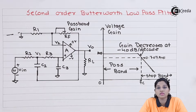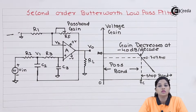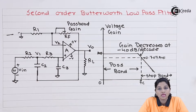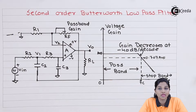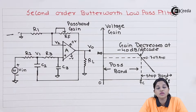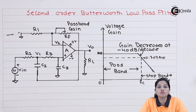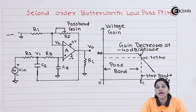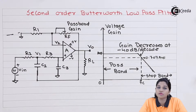The negative sign indicates a decrement in gain. In this video, as we are analyzing the second order Butterworth low pass filter, the gain in the stop band decrements by minus 40 dB per decade. As the order of the filter increases, the roll-off rate also decrements by an additional 20 dB per decade. Now let's analyze the circuit of the second order Butterworth low pass filter.